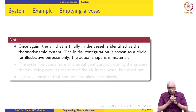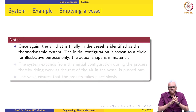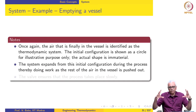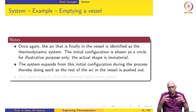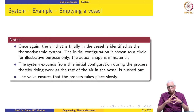To summarize this particular example: the air that is finally in the vessel is identified as the thermodynamic system. The initial configuration is shown as a circle for illustrative purposes only — the actual shape is immaterial. This will be justified in the module on work and heat when we develop expressions for displacement work. The system expands from its initial configuration during the process and eventually fills the entire vessel. We can infer that this system is doing work to push the air out of the vessel, and the valve ensures that the process takes place slowly.